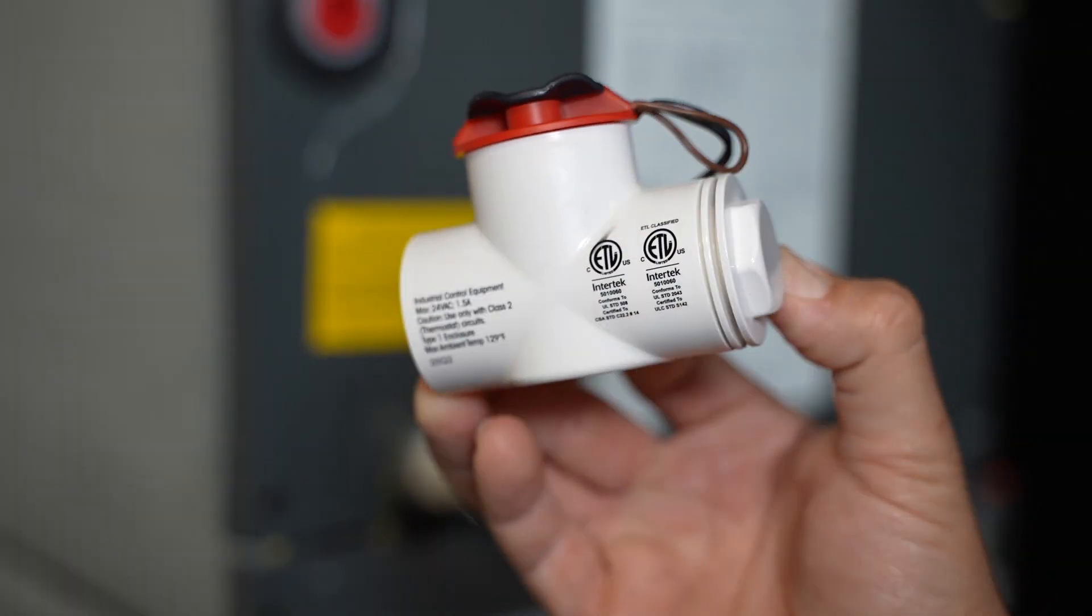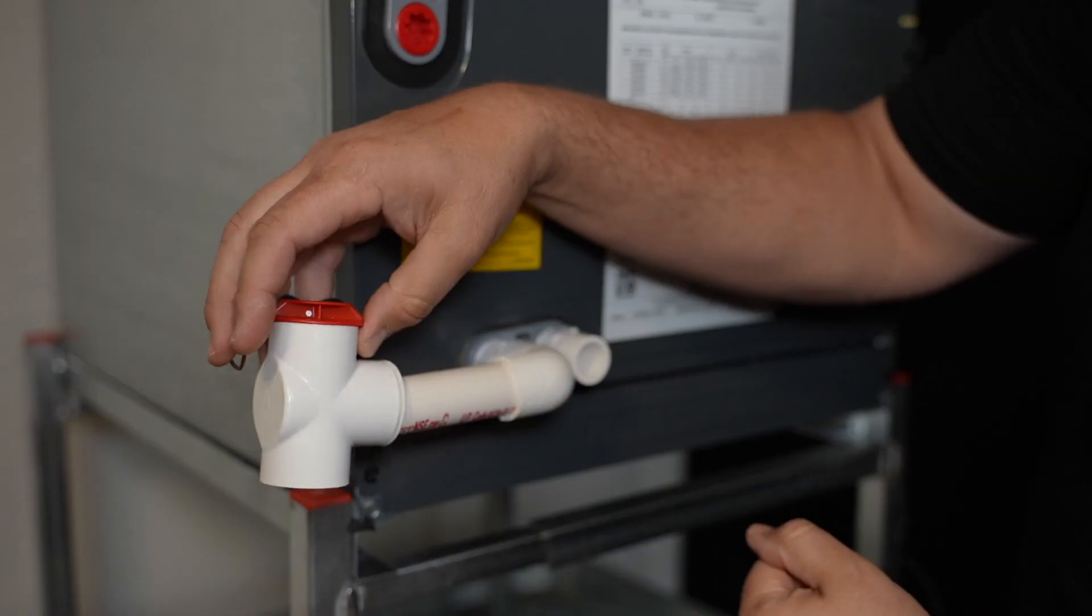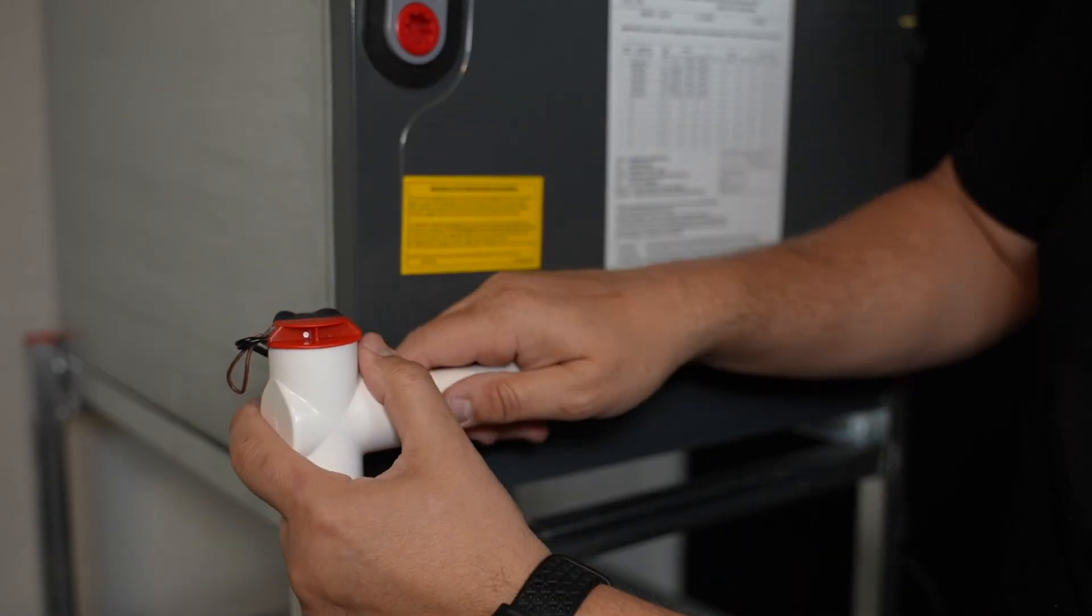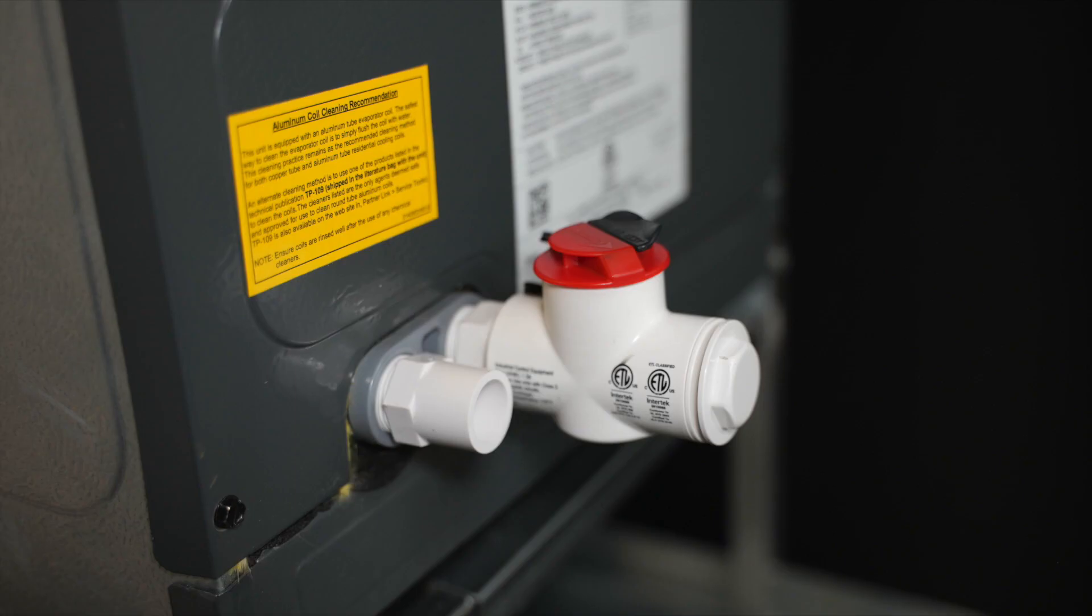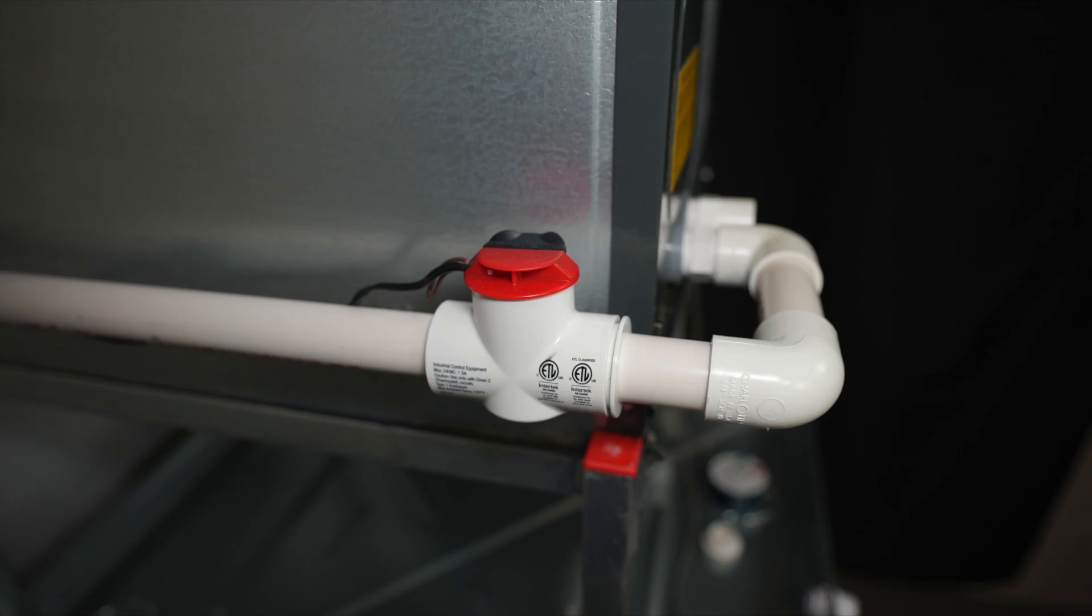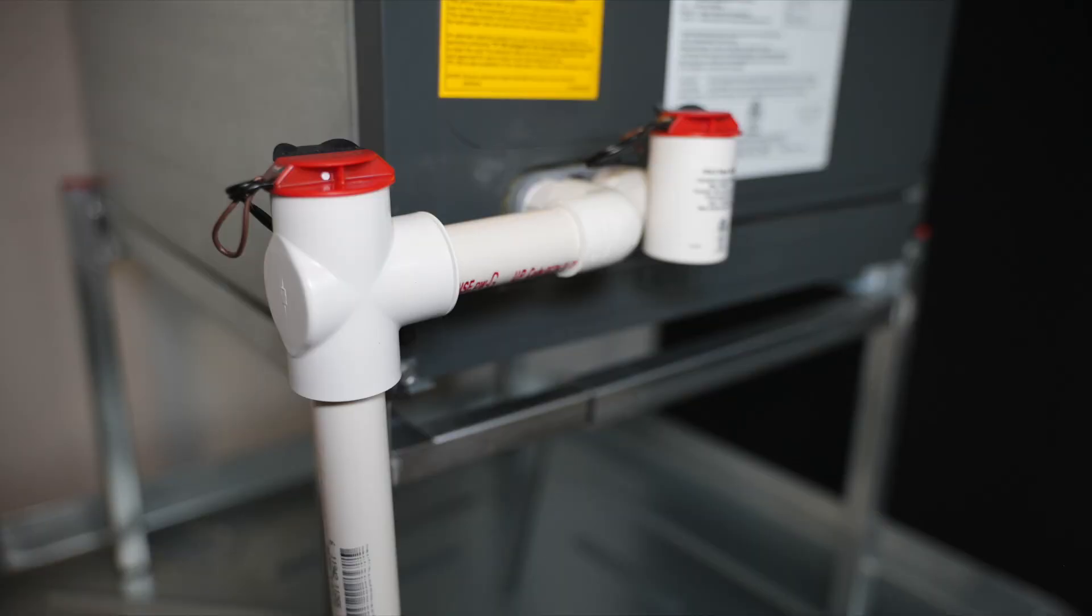The CS1 condensate overflow switch is a versatile option for primary or secondary drain line applications. It has three install configurations: primary pan secondary port, primary pan main port in the horizontal drain line, and primary pan main port in the vertical drain line.